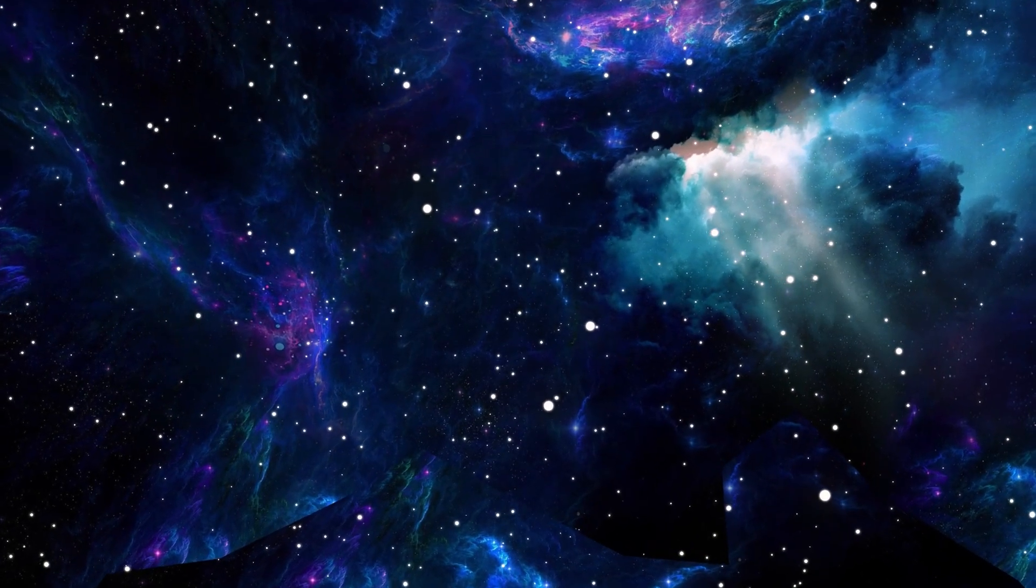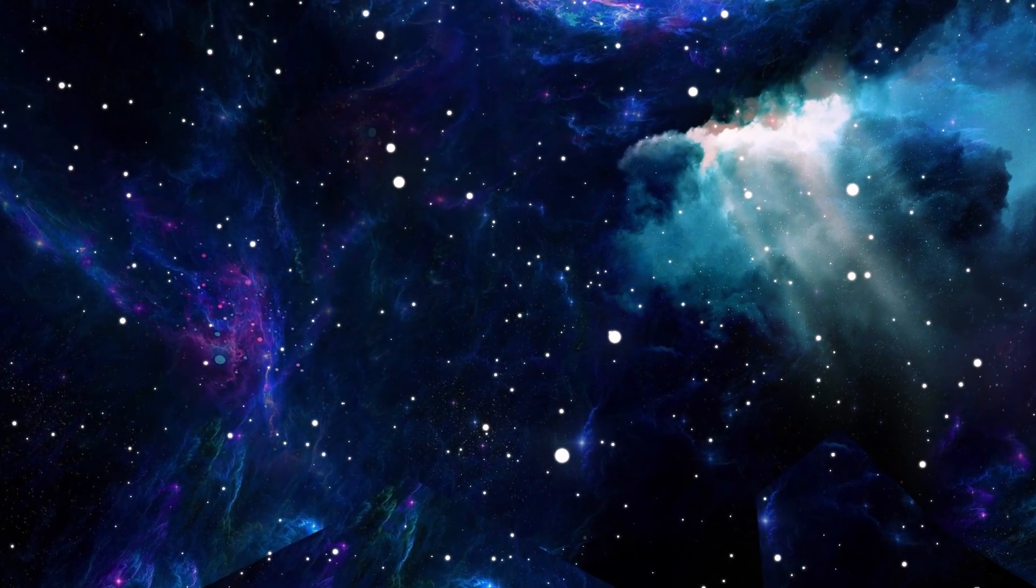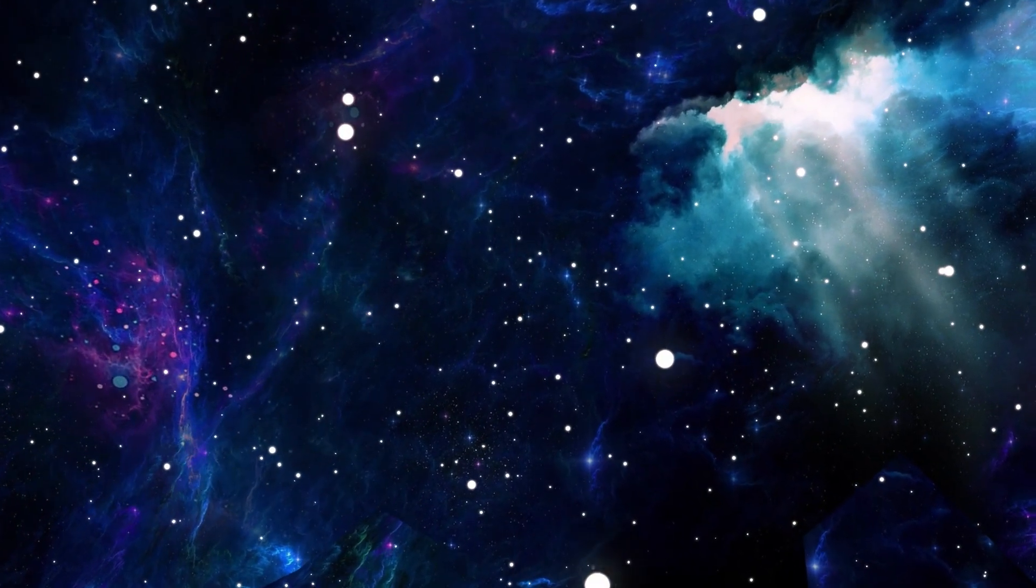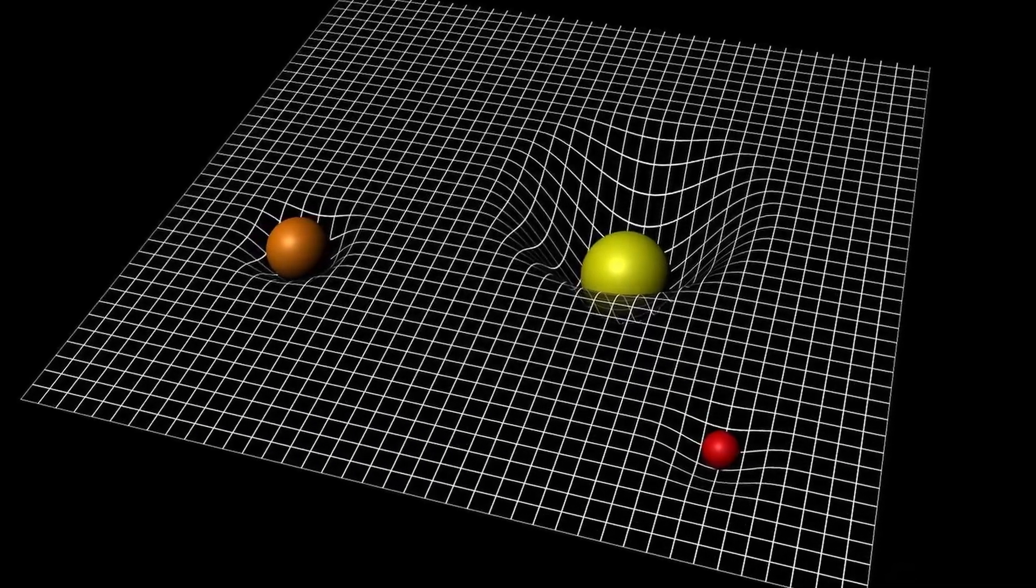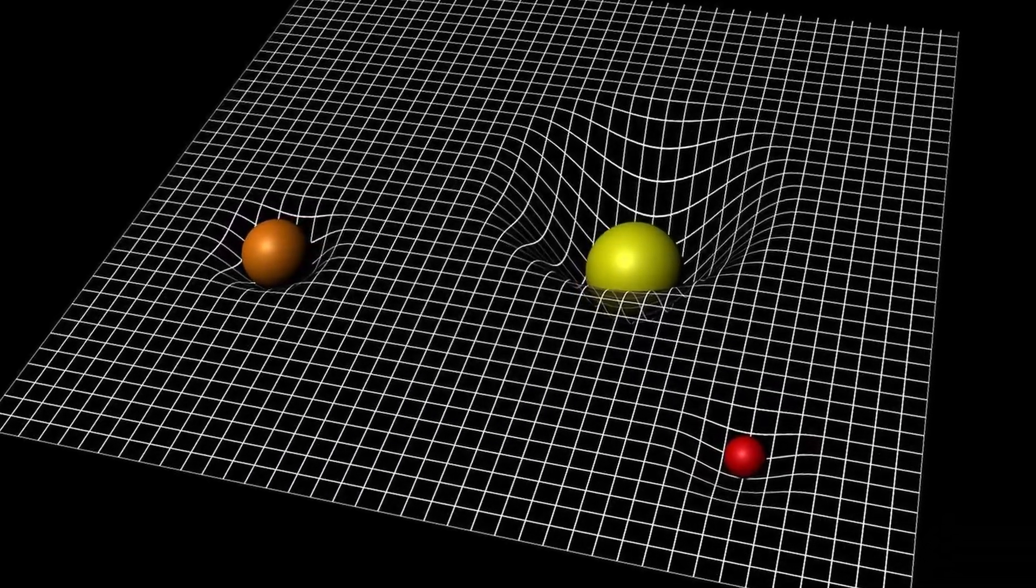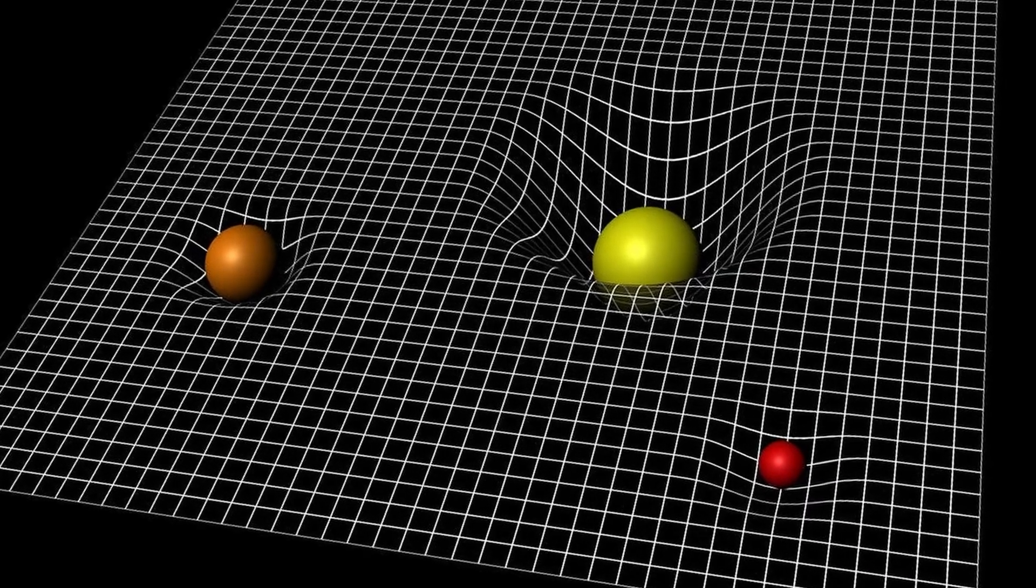In conclusion, while it might initially seem counterintuitive that light, which is massless, can be affected by gravity, our deeper understanding of gravity as the curvature of space-time, courtesy of Einstein's relativity, provides a coherent and beautiful explanation.